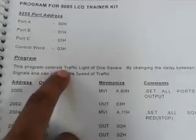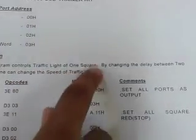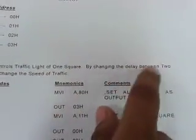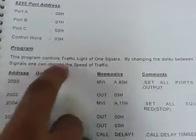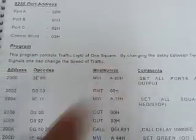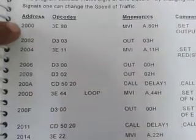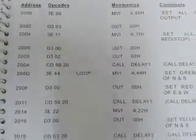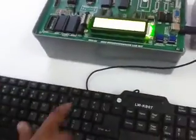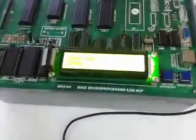This program controls traffic light of 1 square. By changing the delay between 2 signals one can change the speed of traffic. Now enter the program as given in the manual from starting address 2000 onwards. After entering the program press G2000 dot.